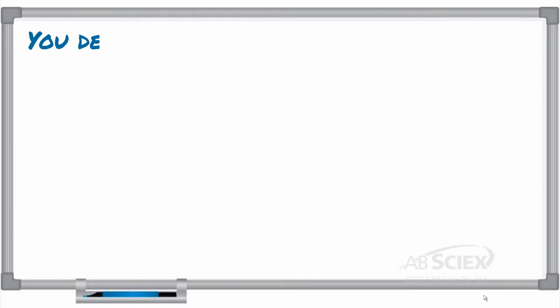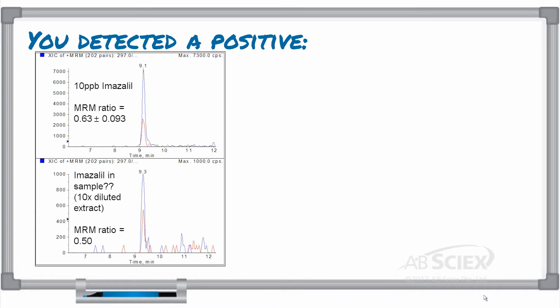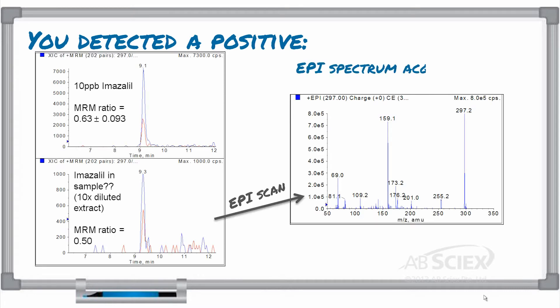So you've detected a residue or contaminant in your sample, and you want to review your MRM-triggered EPI scan data for ID confirmation. With Analyst Software, it's as easy as these six steps.